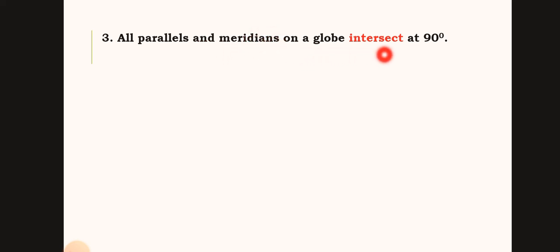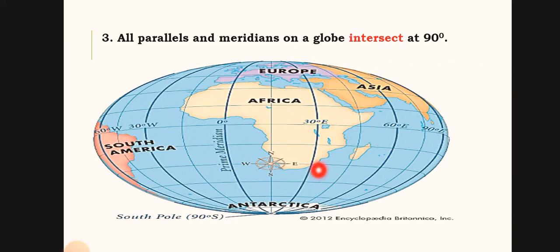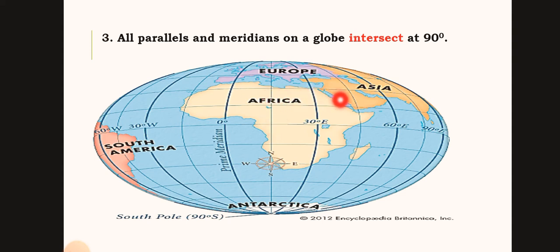The parallels and meridians intersect at 90 degrees. This includes the prime meridian and the equator, which intersect at 90 degrees.